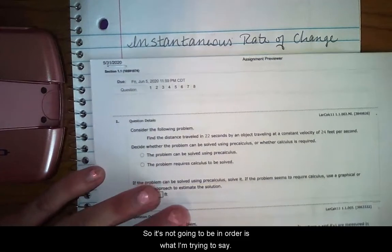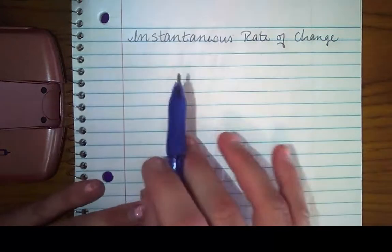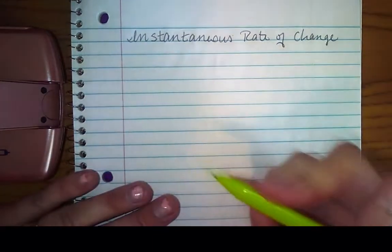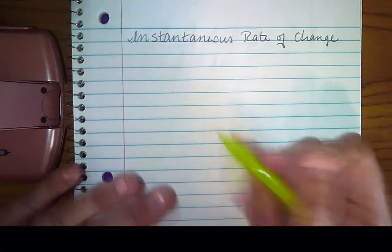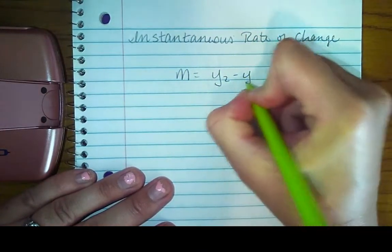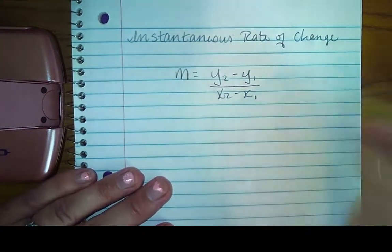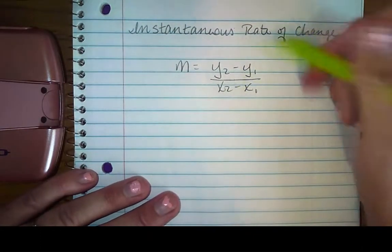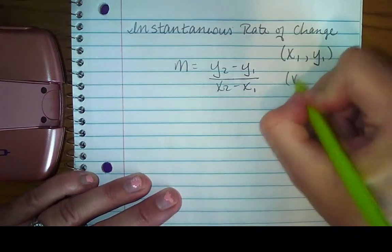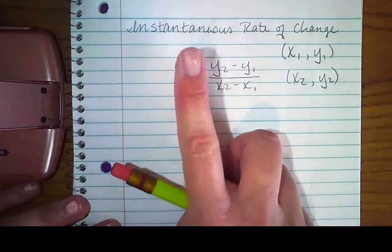So it's not going to be in order. But bottom line is, when we are dealing with differential calculus, what you're working with is called instantaneous rate of change, which we already went over. And so if you remember, your slope formula is m equals y2 minus y1 over x2 minus x1. And remember, that requires two points. You have two points on a line, which would be x1, y1, and x2, y2.